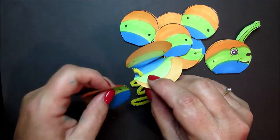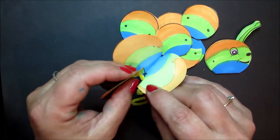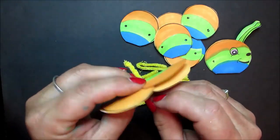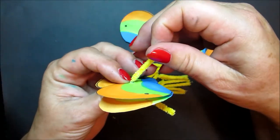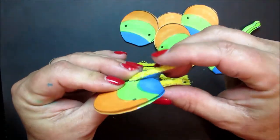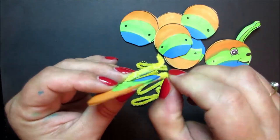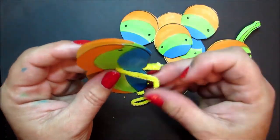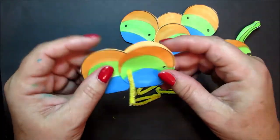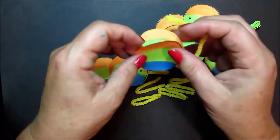So push the pipe cleaner through one side. Then through both sides of the tail and the other side of the body piece. And then close down. And at the bottom, just bend to make the feet. So let's do that again.